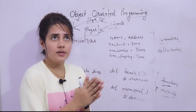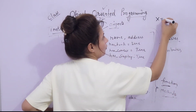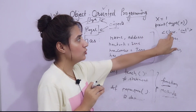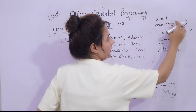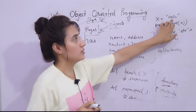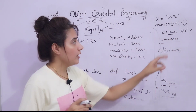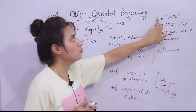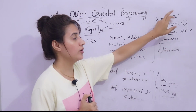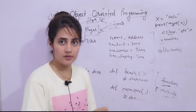Everything in Python is an object. If I write x = 1 and print type(x), you get class int - so x is an object of class int. If x = 'hello', it gives class str - so x is an object of class str. Same with functions. We have inbuilt classes in Python and we use objects. Everything we do with the help of objects in Python programming.